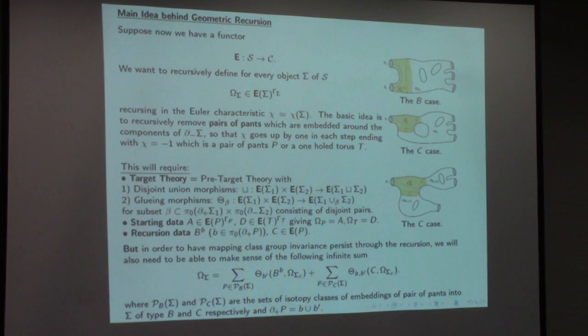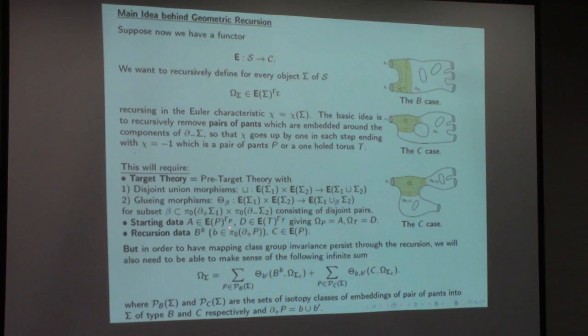Beyond the target theory, I also need starting data. When the recursion reaches a pair of pants or a one-holed torus, I can't go further. Starting data A is an element in the vector space of the pair of pants, mapping class group invariant part. D is an element in the vector space of the one-holed torus, mapping class group invariant part. I assign omega_P = A and omega_T = D. But when recursing I also use separate recursion data B and C, which are independent of A, and I use those during the recursion itself.